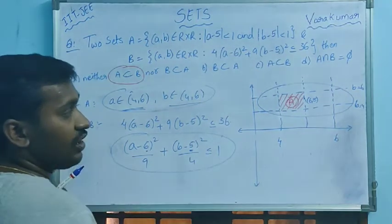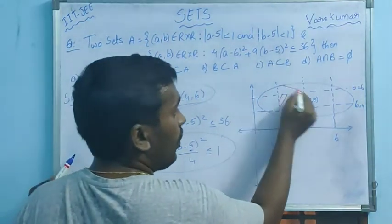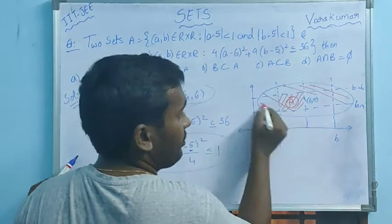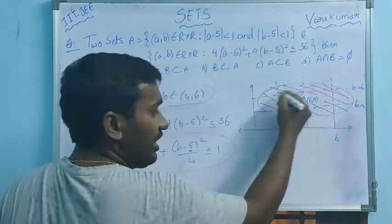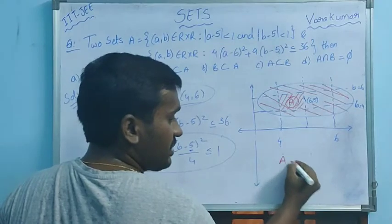So now it is clear that A is smaller than B. But A is included in B.